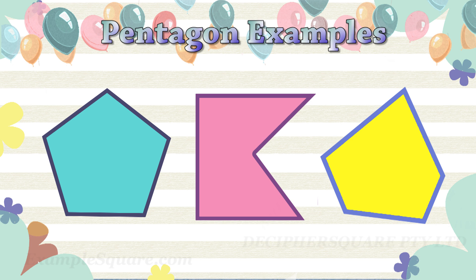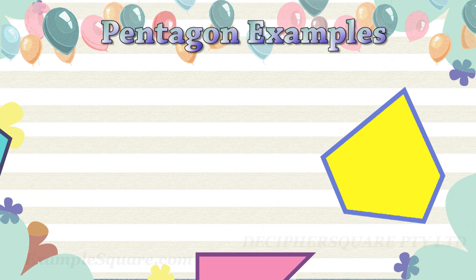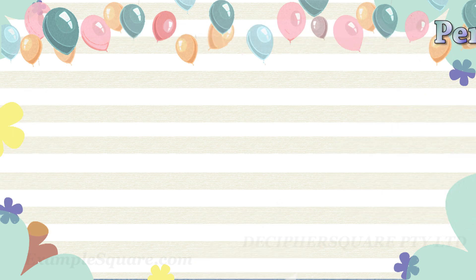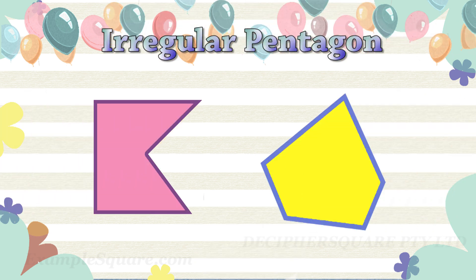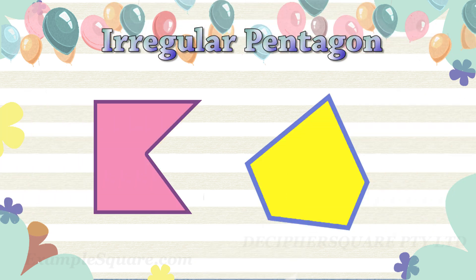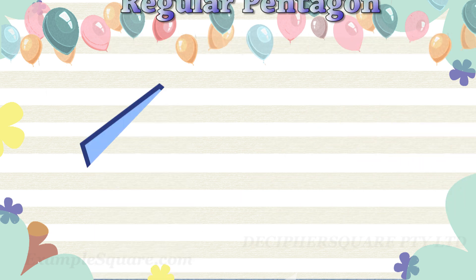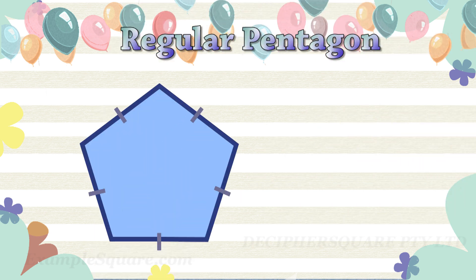If all five sides of a pentagon are equal and all five interior angles are equal, then it is a regular pentagon; otherwise it is an irregular pentagon. This is an irregular pentagon. This is a regular pentagon.